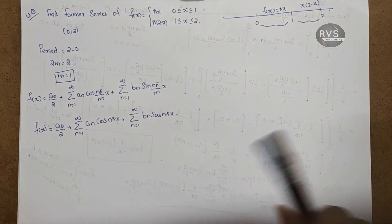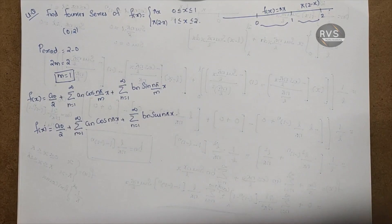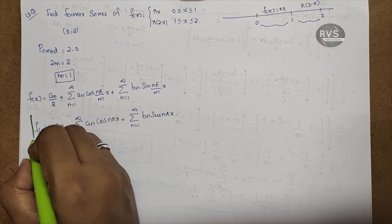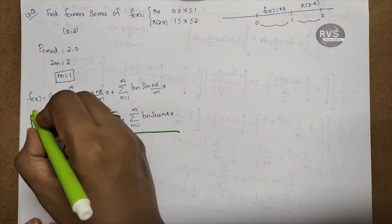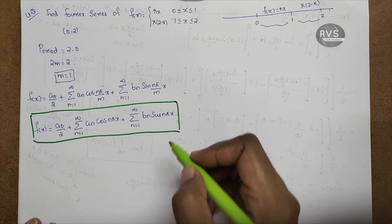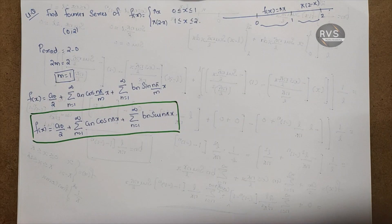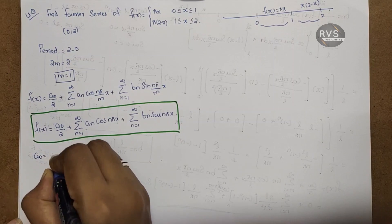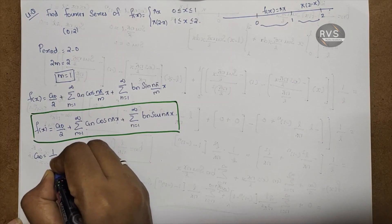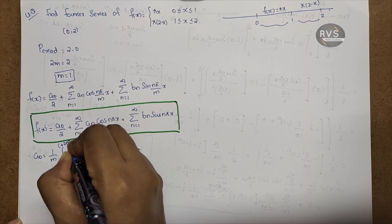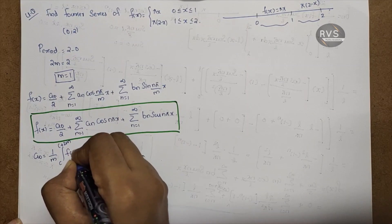This is F of x. Now we substitute F of x. The formulas for a0, a_n, and b_n are: a0 equals 1 by m into integral from c to c plus 2m of f(x) dx.